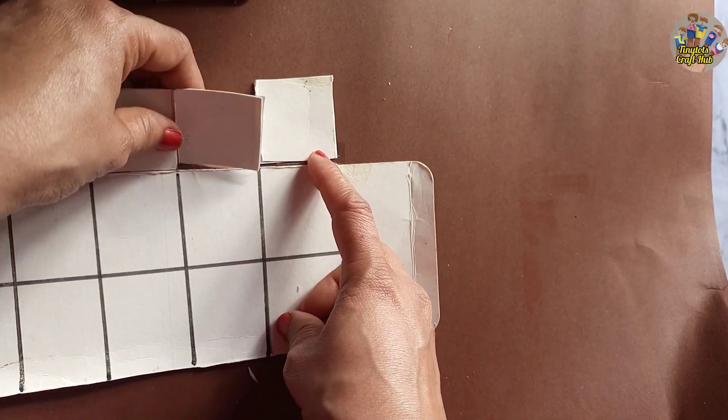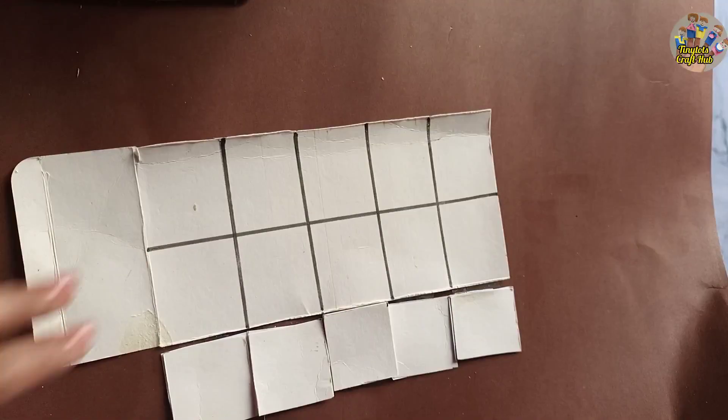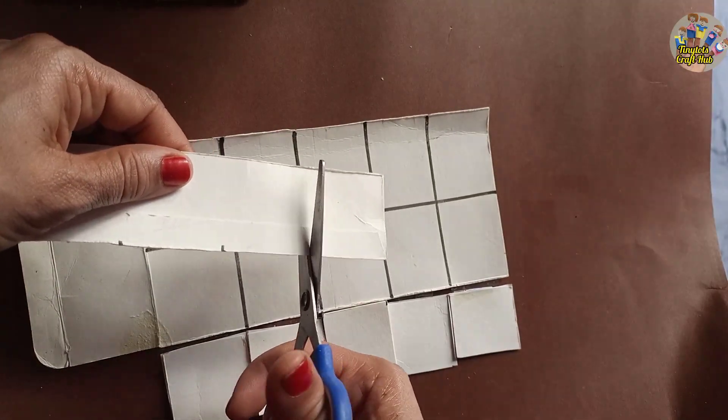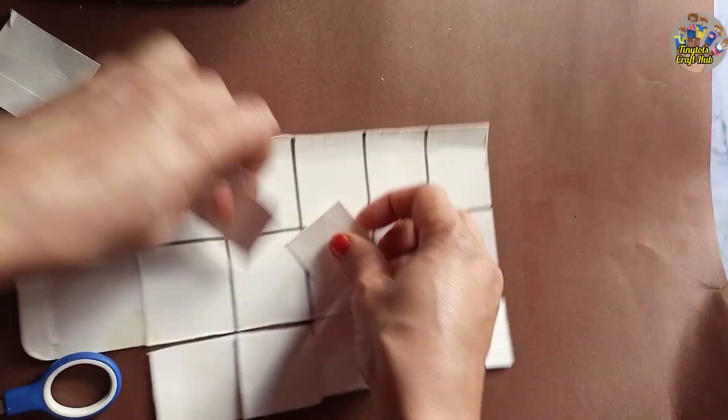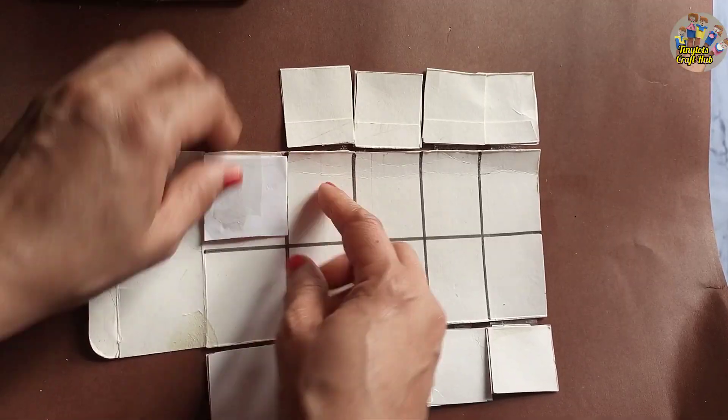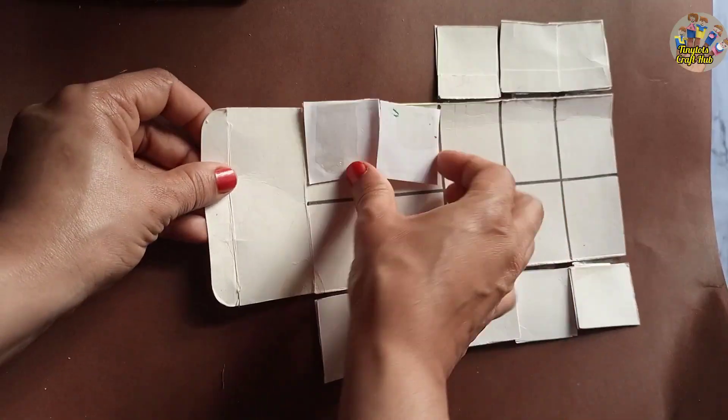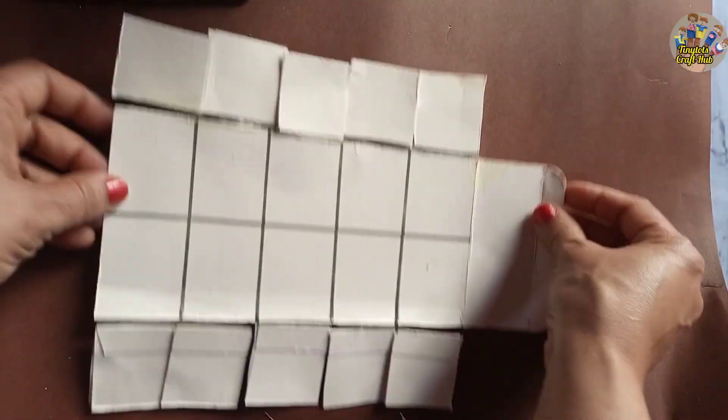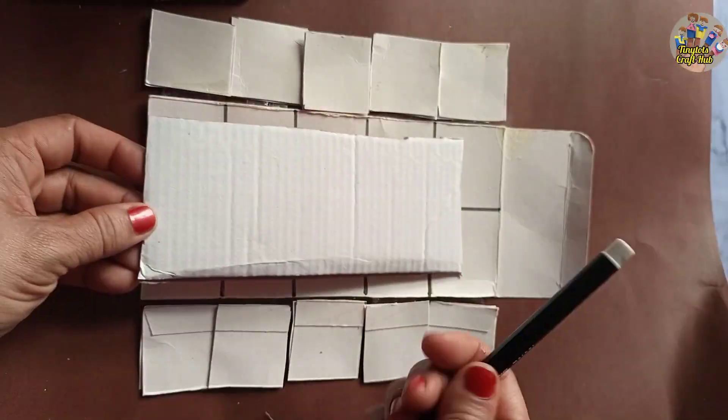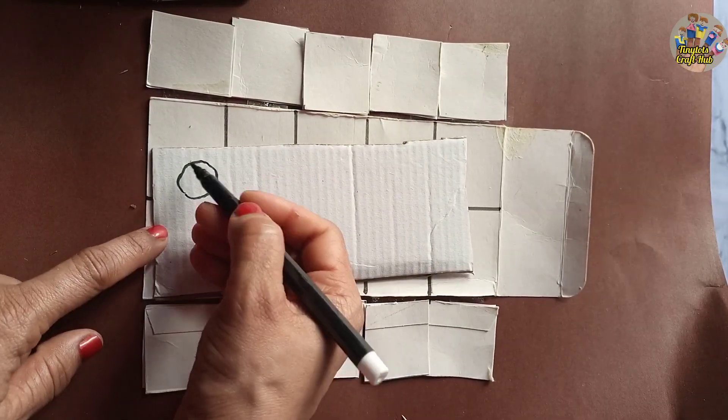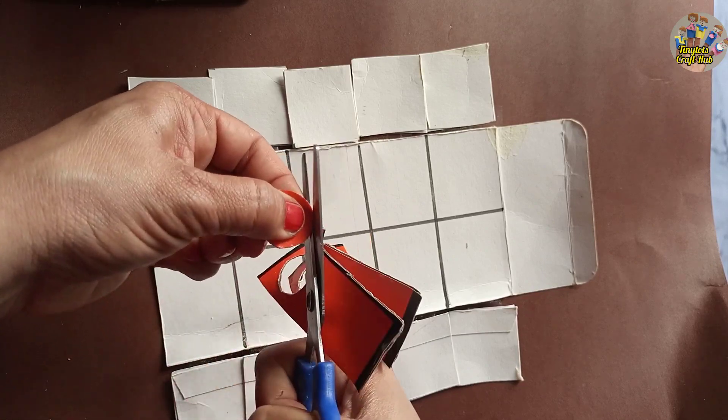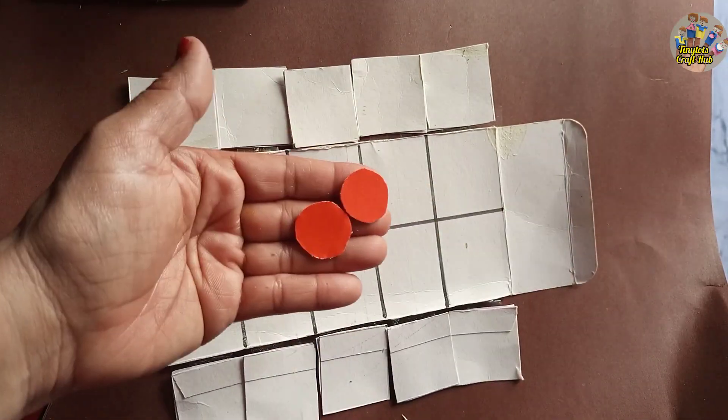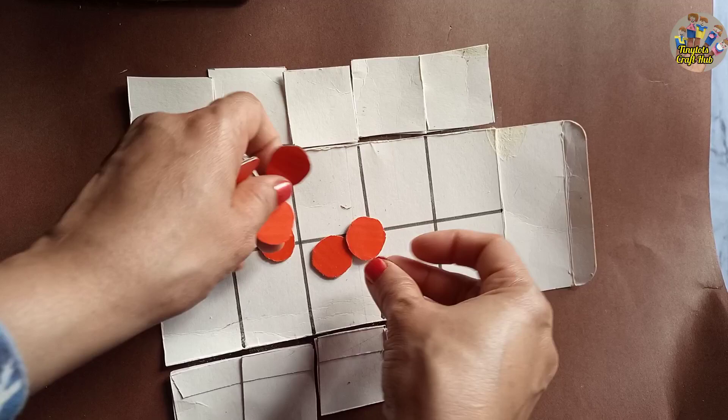You will also join five pieces on the other side like this. All the pieces are attached now. You will also need colored cardboard or paper and you will draw ten dots which will be really helpful for your child to count.